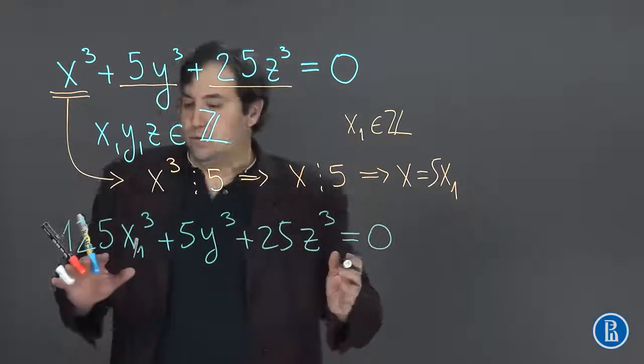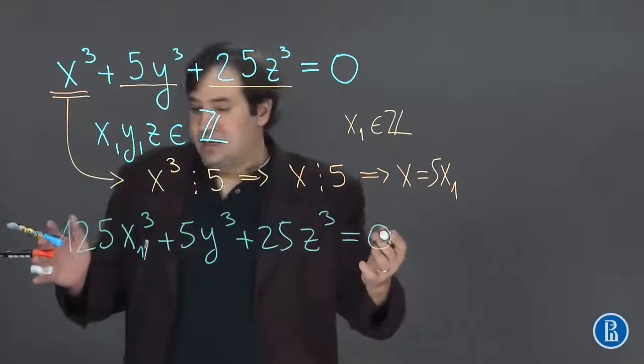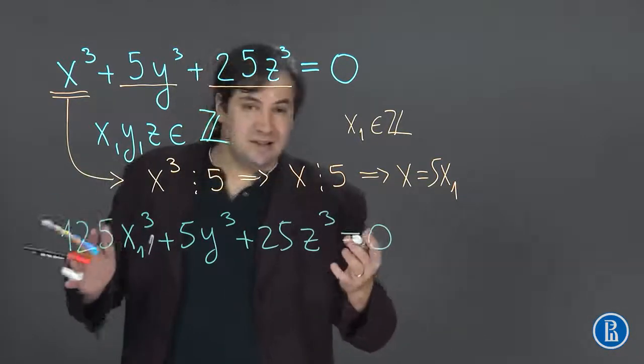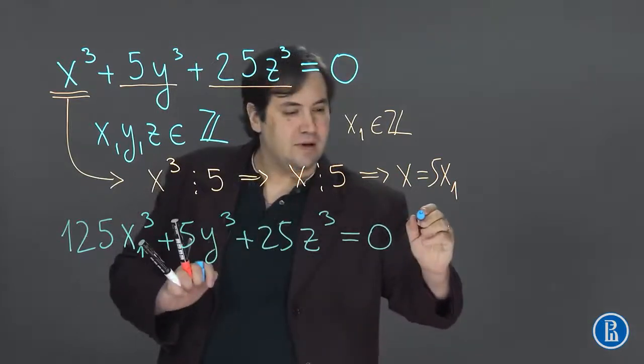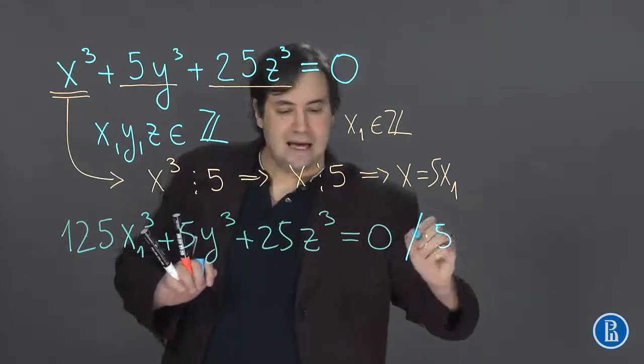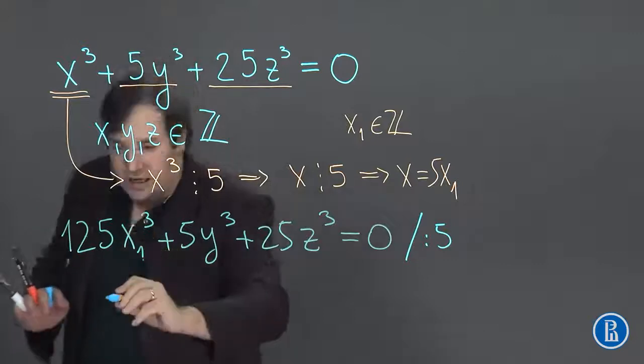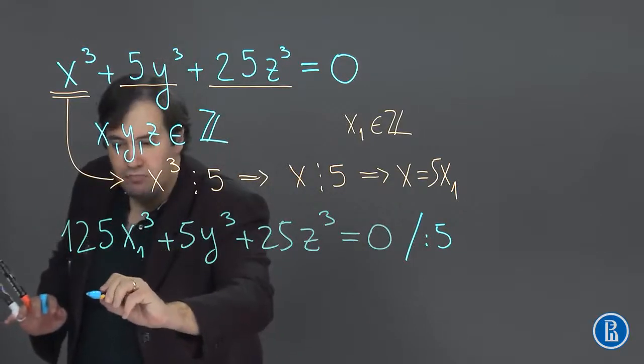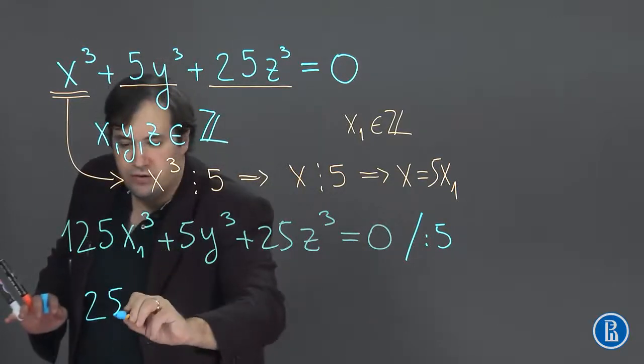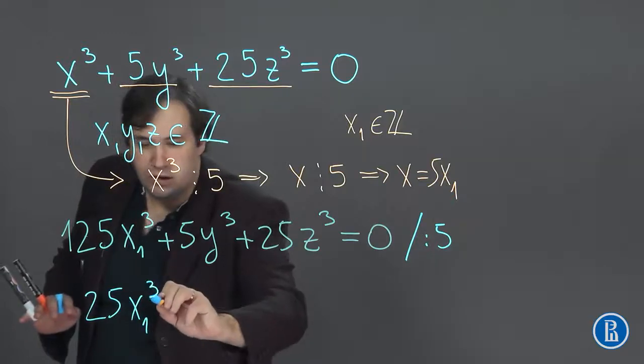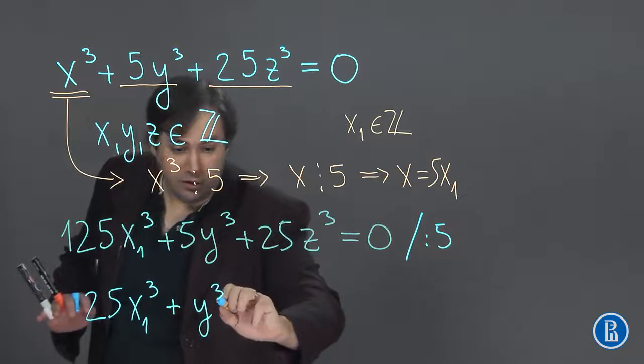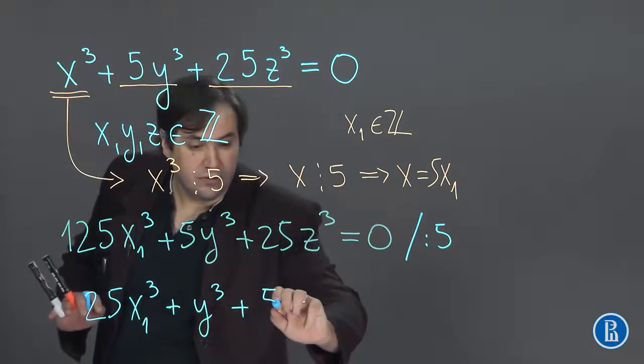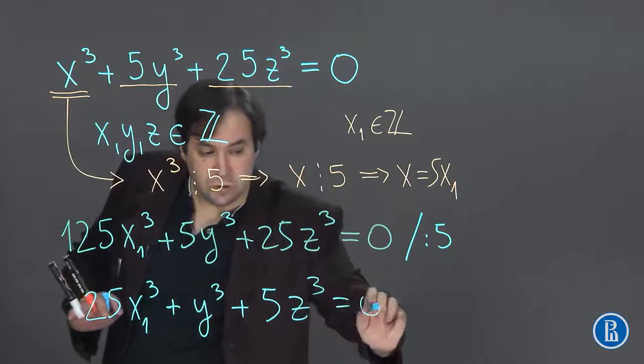And now we see that all summands are divisible by 5. So we can divide this equation by 5 and obtain the following: 25x₁³ plus y³ plus 5z³ equal to 0.